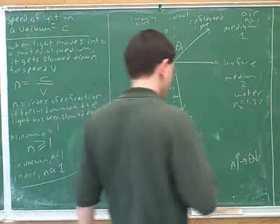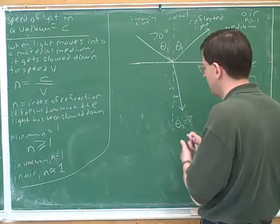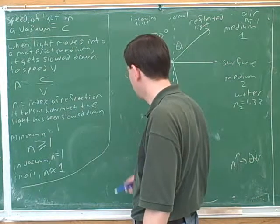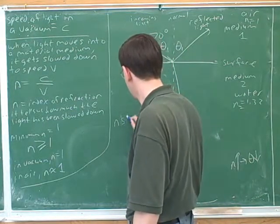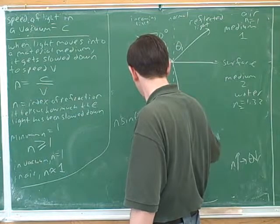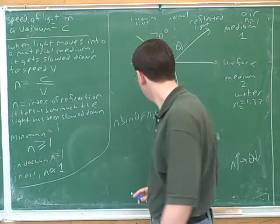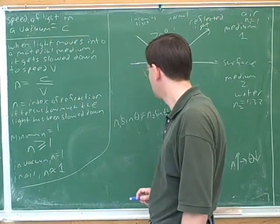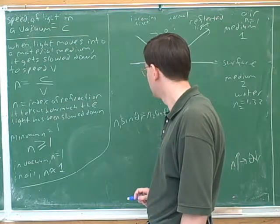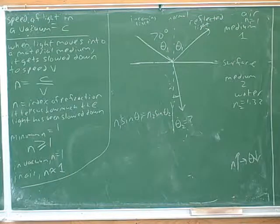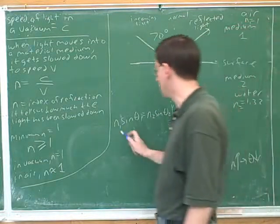What equation are we using? I was going to use Snell's Law. And what does Snell's Law say? N1 times the sine of theta 1 equals N2 times the sine of theta 2. What are we plugging in for N1? 1 — because we're starting in the air. You need to have that memorized.